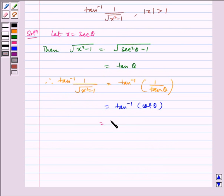This is equal to tan inverse of tan of pi by 2 minus theta, which is equal to pi by 2 minus theta, which is equal to pi by 2 minus sec inverse x.